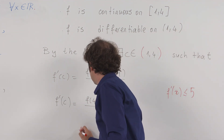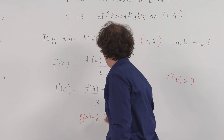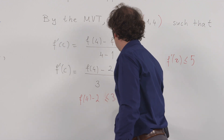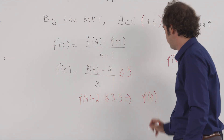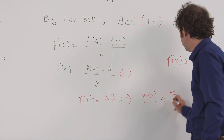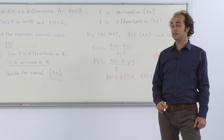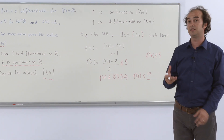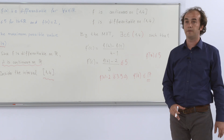Since f'(c) ≤ 5, we have (f(4) minus 2) divided by 3 ≤ 5, which gives f(4) minus 2 ≤ 15, so f(4) ≤ 17. Therefore the maximum possible value of f(4) is 17. This is the maximum value restricted by the conditions given in the problem.